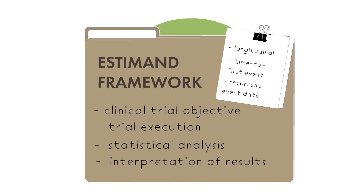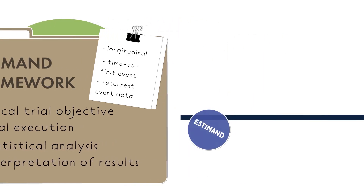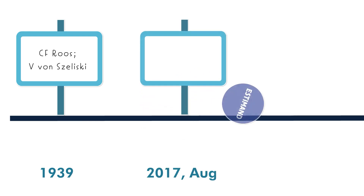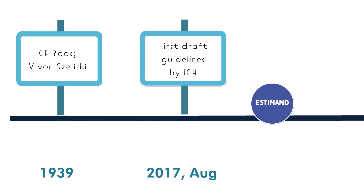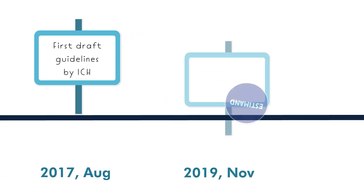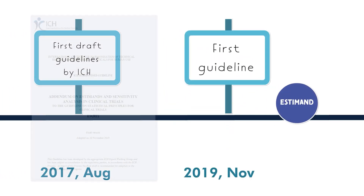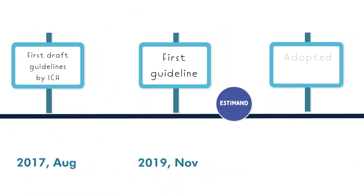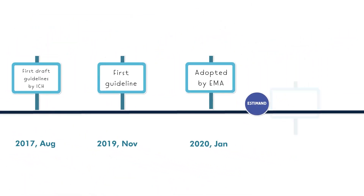Now it's time for the emergence of estimand guidelines. The term estimand was first used by Ross and von Silisky in an article in 1939. First draft guidelines for estimands were published in 2017 by ICH for public consultation. The first guideline was adopted on the 29th of November 2019, adopted by EMA on January 20th, and by FDA in 2021.